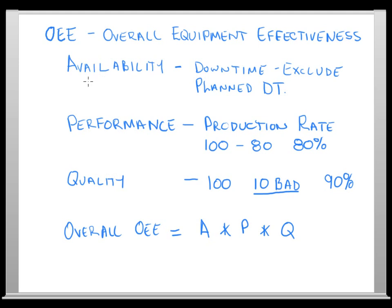It's very important to note that each of these components is isolated. During downtime, availability is affected, but performance is not measured since the machine isn't running. Similarly, if quality drops, quality falls but not performance. If you are running, not in downtime, and producing good product, then performance comes into factor. They each change individually — they don't change together.